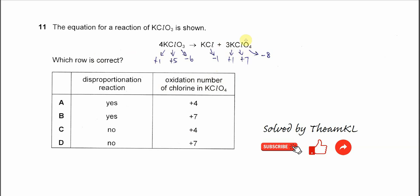In this product, oxygen is negative 2 times 4, so it's negative 8. Potassium is always positive 1, so in order to make sure the compound is neutral, the chlorine must be positive 7 oxidation state.